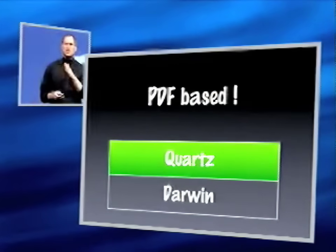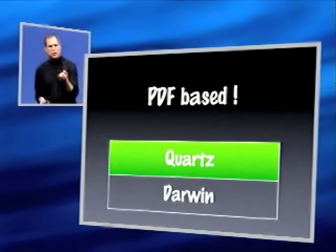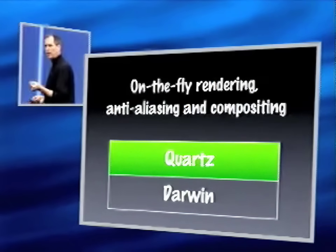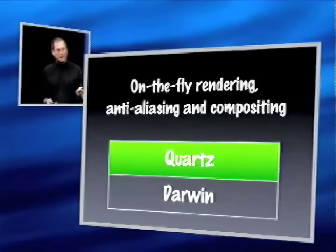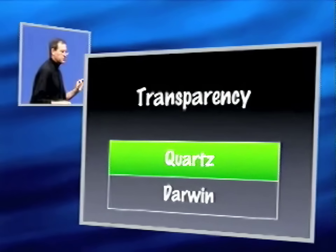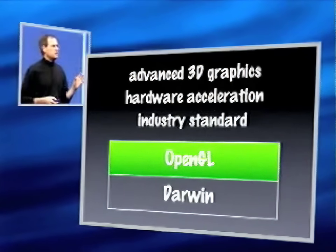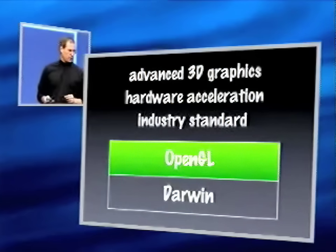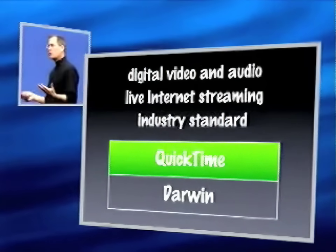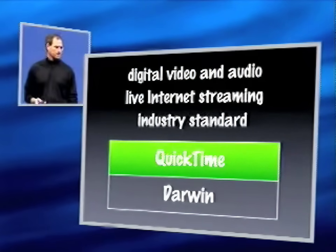Let's take a look at Quartz. Quartz is PDF-based. You know when you go to the web and you see PDF documents? You read them with Acrobat, that great technology invented by Adobe? Well, that technology is now at the core of Mac OS X's graphics. So you can image PDFs instantly. We have on-the-fly PDF rendering, anti-aliasing, and compositing, which will blow you away — built at the core of the OS. So now all applications get this for free, and we have built-in transparency in the model. Our OpenGL 3D standard is the most widely supported 3D standard in the industry — very advanced, with full hardware support, built into the core of the operating system. And obviously QuickTime for digital video and audio, live internet streaming, internet standards, 33% market share, built into the core of the OS. Those are our killer graphics.